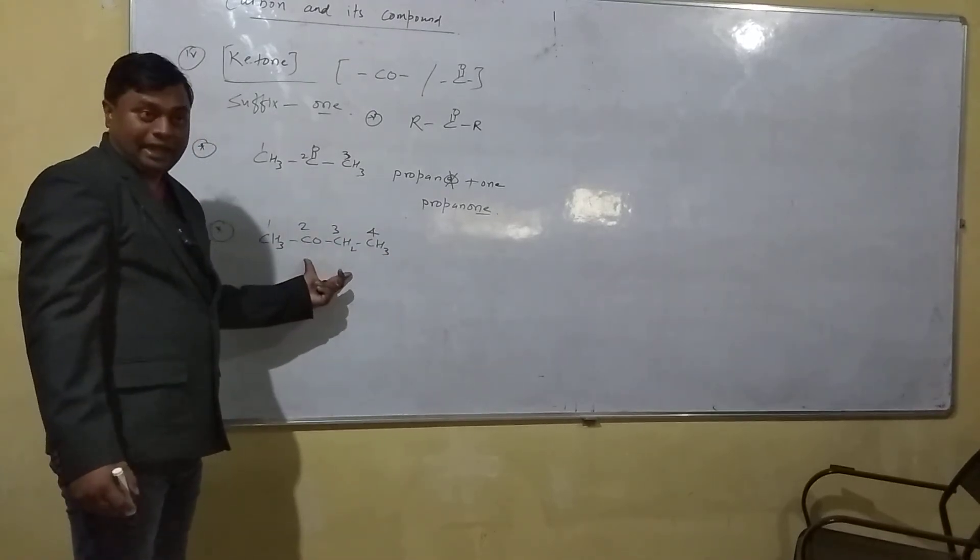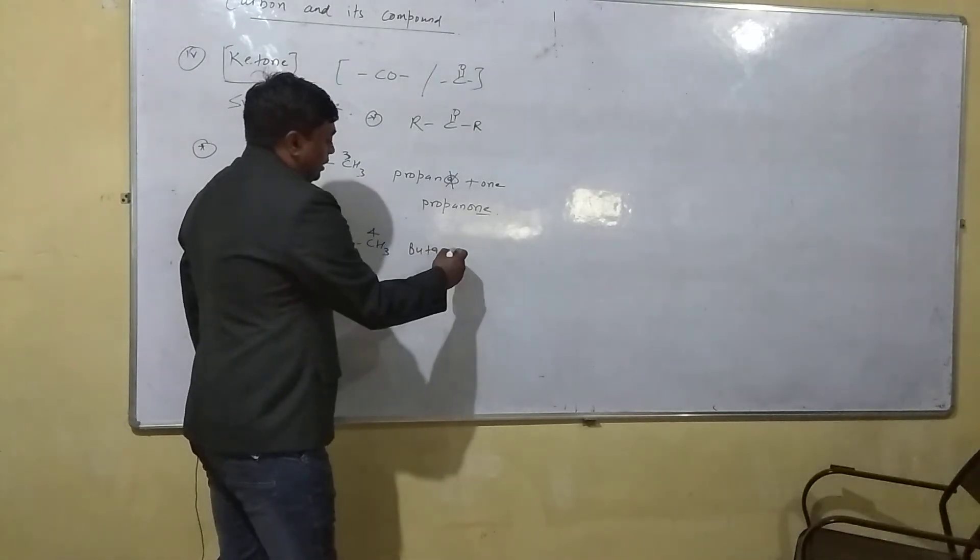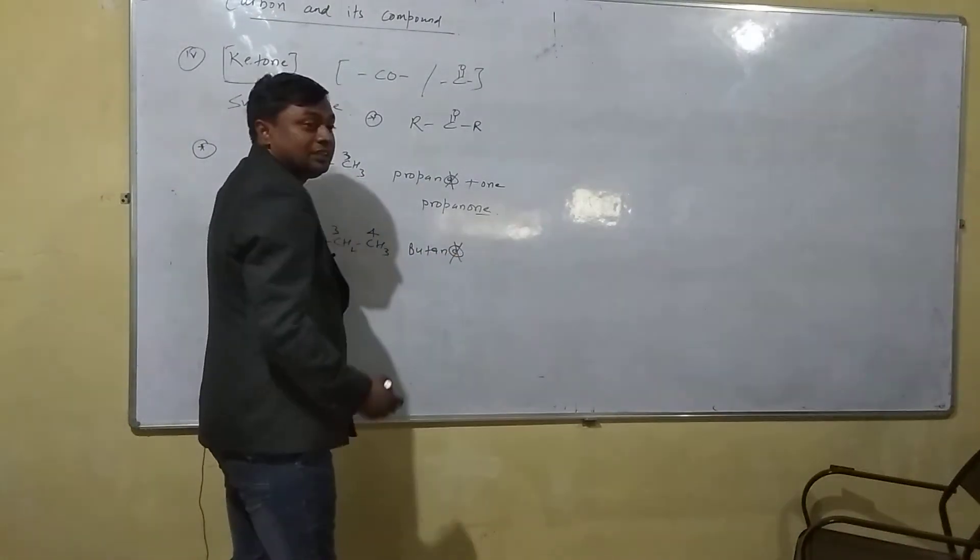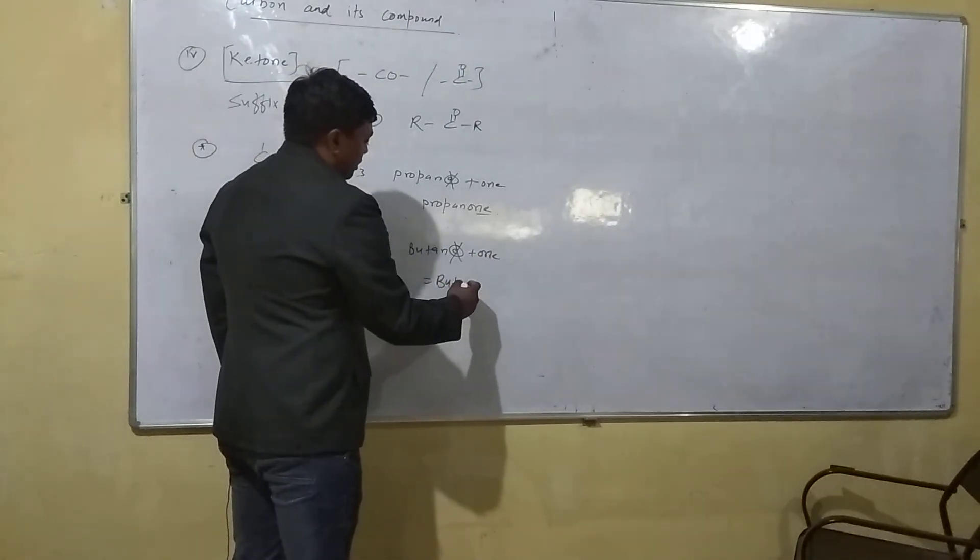4 carbon atoms is what? Butane, okay? So you just write butane. In the butane, you have to just remove this E, add -one. So what is this? Butanone. What is this? Butanone.